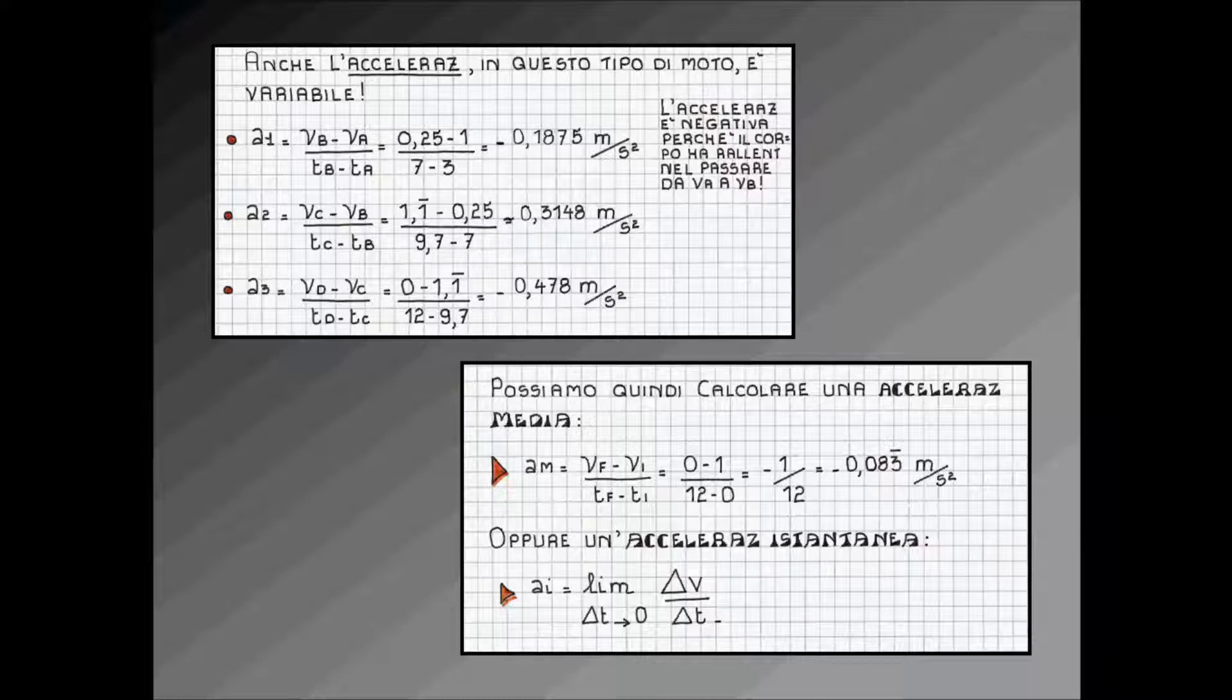In alternativa, è possibile ricorrere ad un'accelerazione istantanea. L'accelerazione istantanea viene indicata con il simbolo AI e viene definita come il limite per ΔT che tende a zero del rapporto fra ΔV e ΔT, variazione della velocità fratto variazione del tempo.